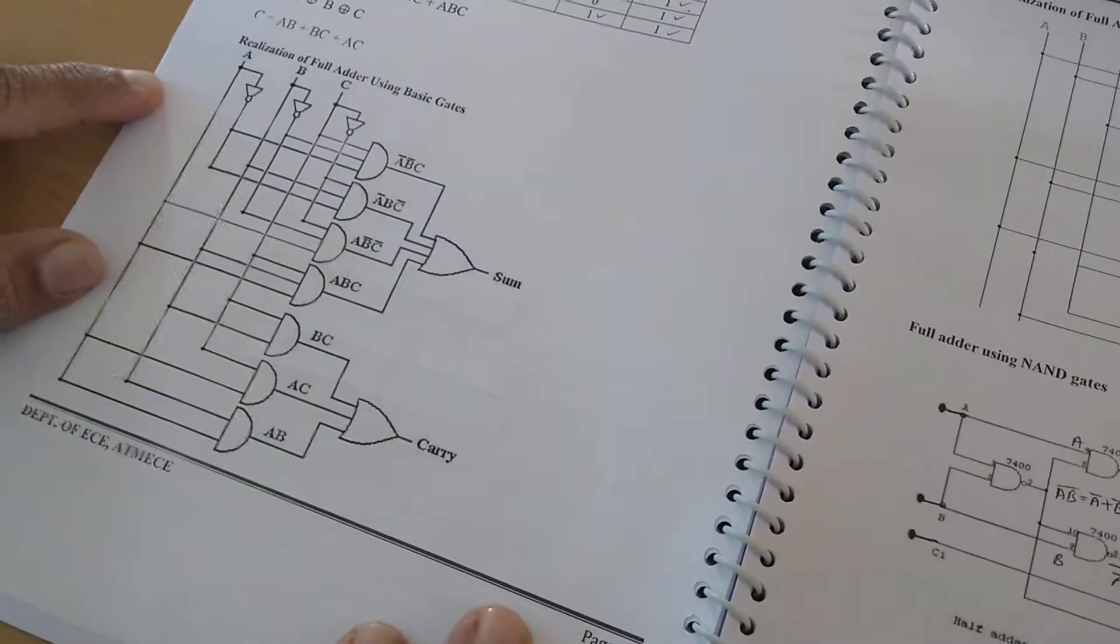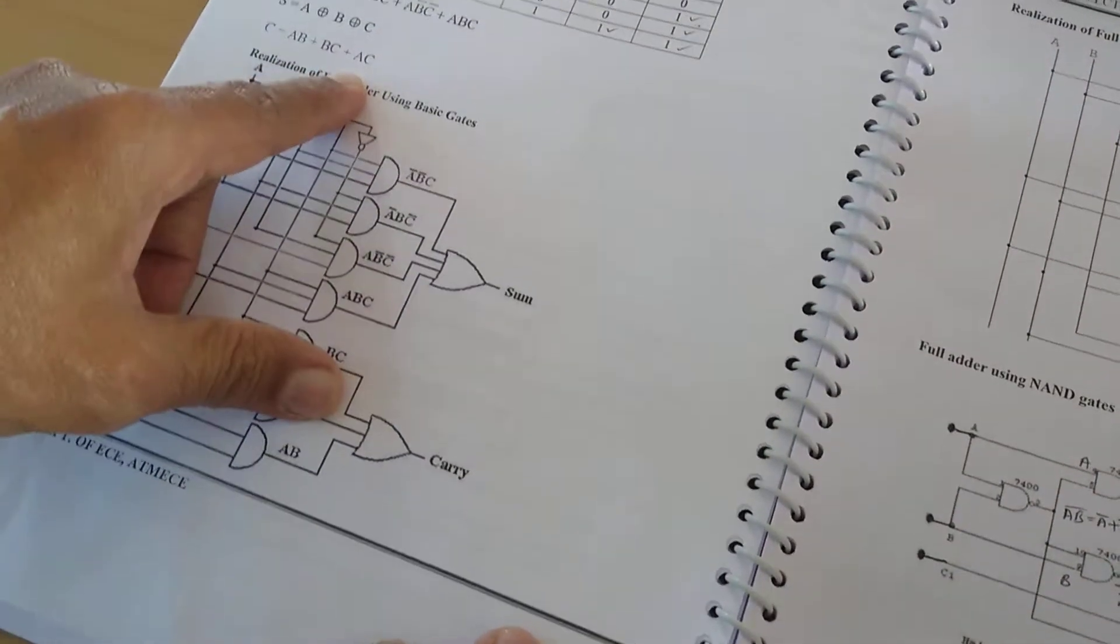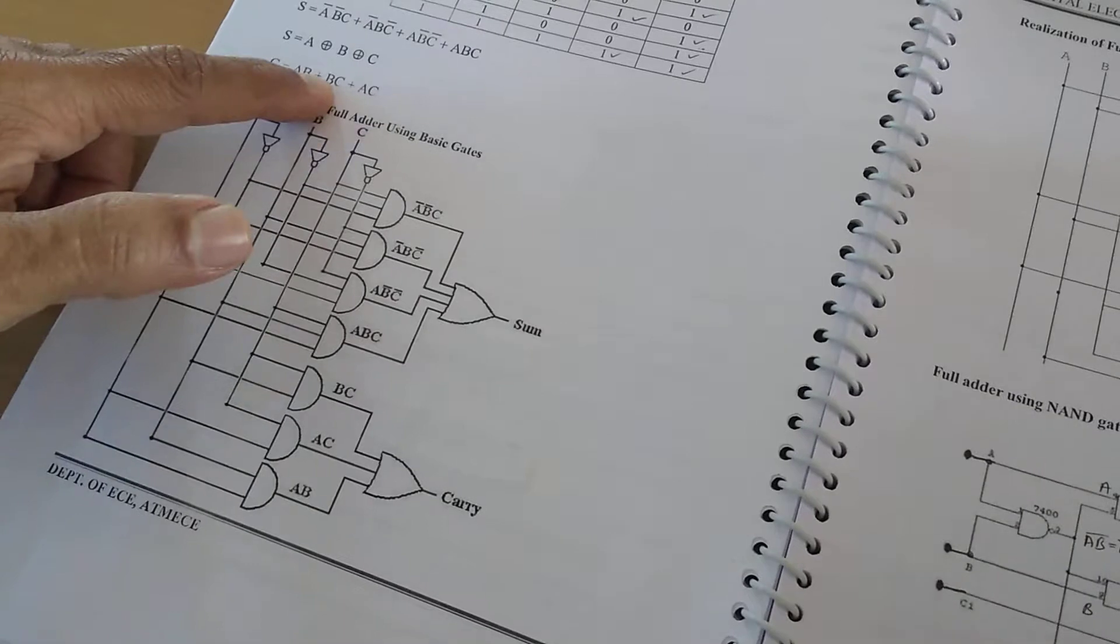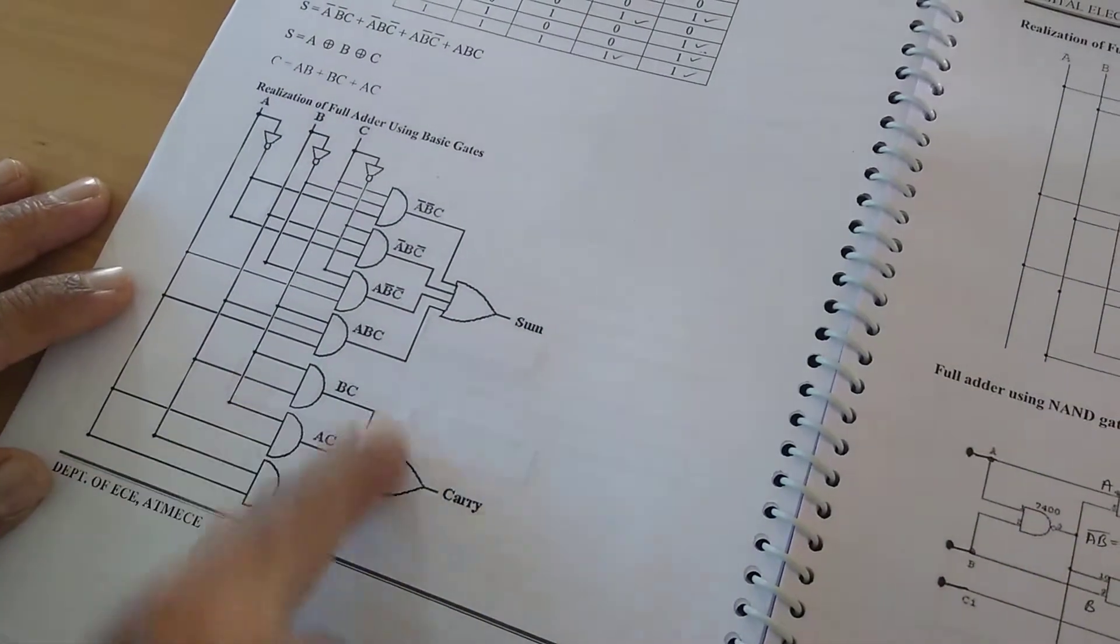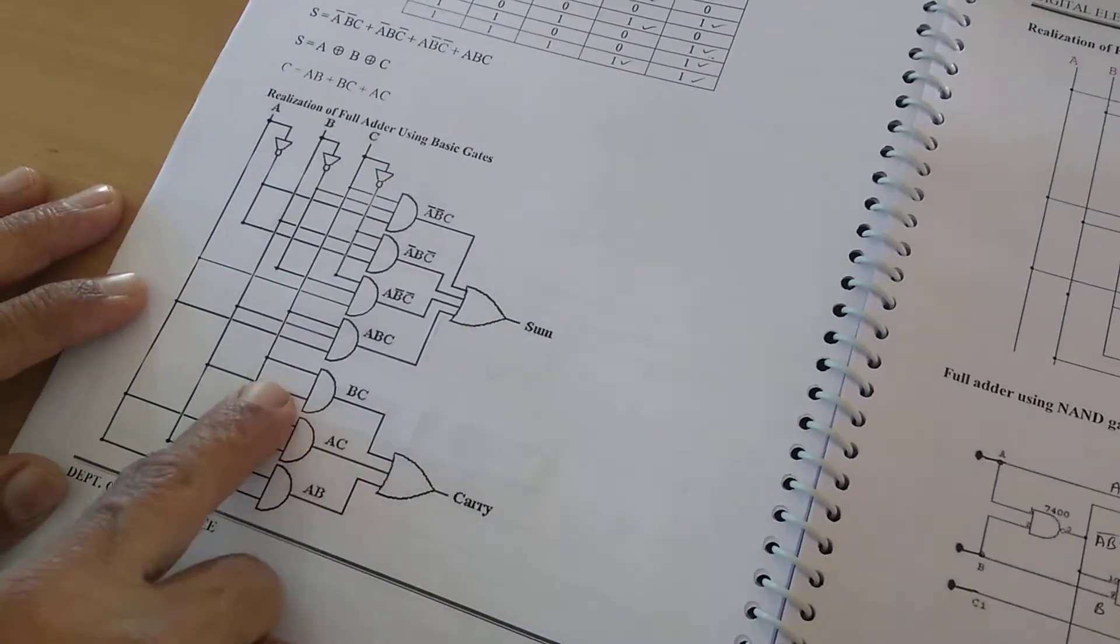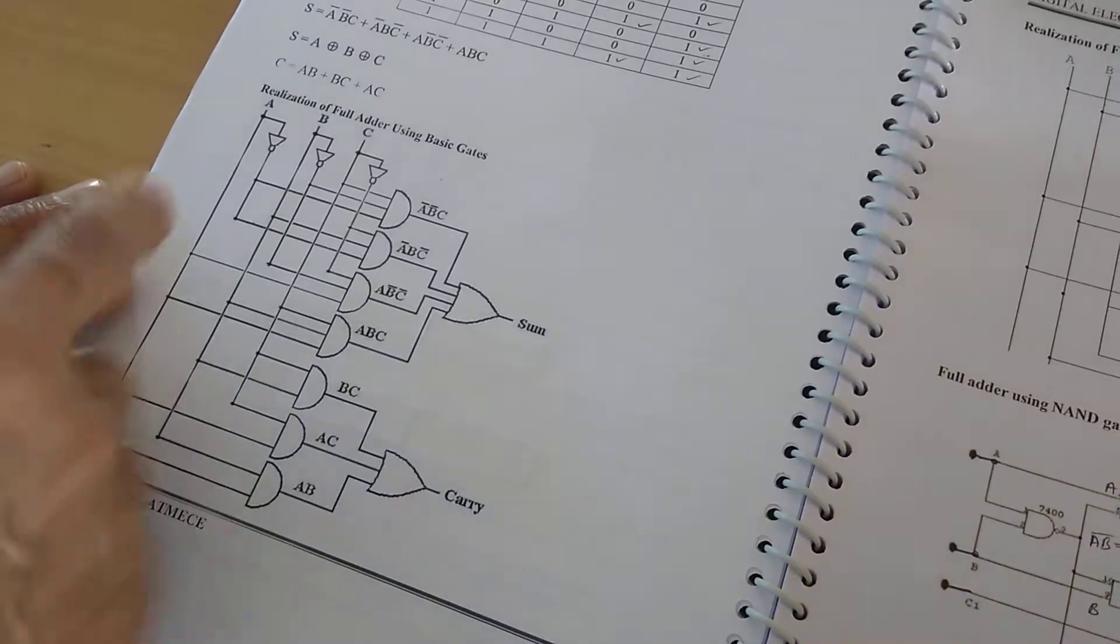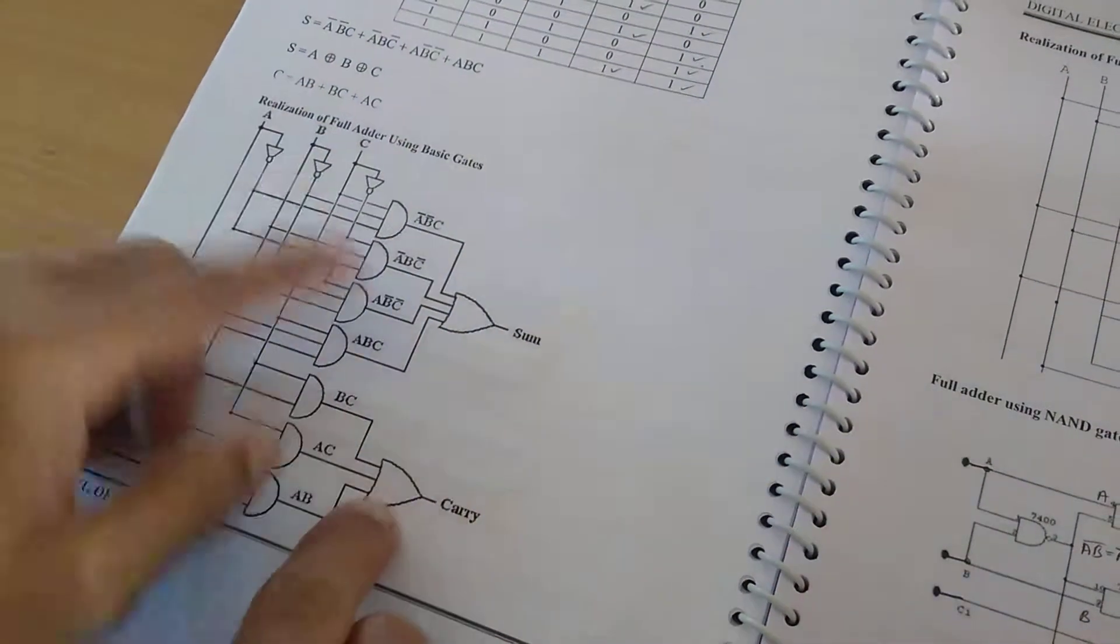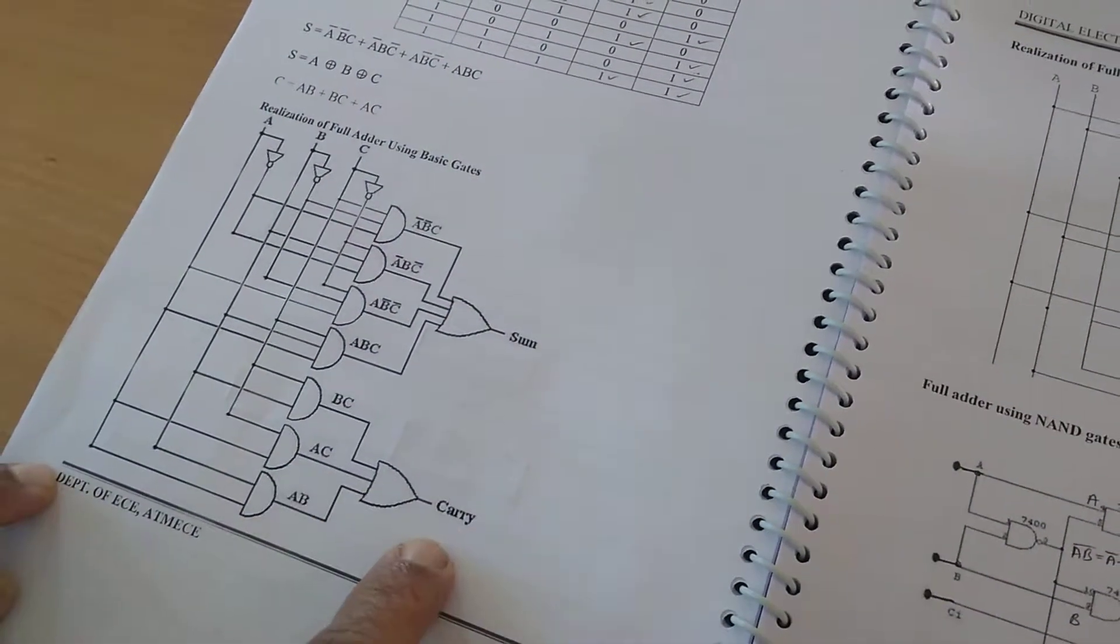In case of carry, we require two input AND gates since we have got AB, BC, AC terms. We are using here two input three AND gates and they are connected to AB, BC, and CA. Then they are all together and we will get the carry.